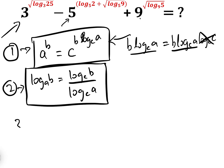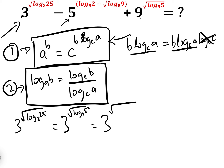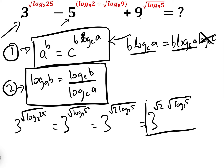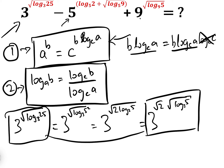Let's look at the first term: 3 to the power of √(log_3(25)). Since 25 = 5², this becomes 3 to the power of √(log_3(5²)), which equals 3 to the power of √(2·log_3(5)), which simplifies to 3 to the power of √2 · √(log_3(5)). There's not a lot more we can do with that, so we leave it — it's in the right base for both the power and the log.